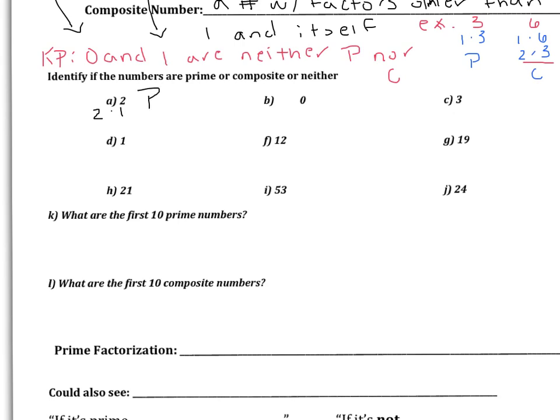Let's take 12. I know 1 times 12 is a factor, 3 times 4 is a factor, 2 times 6 is a factor. Seeing all these different factors, 12 must be composite because it has more factors than 1 and itself. Now I want you to identify these numbers as prime or composite — complete sections A through L, the highlighted blue section.